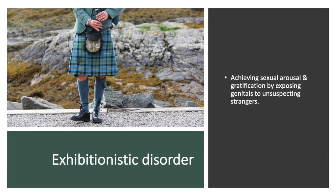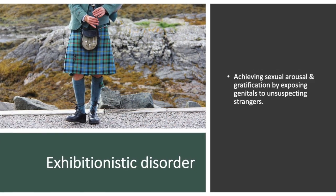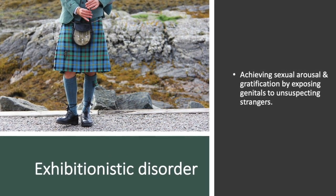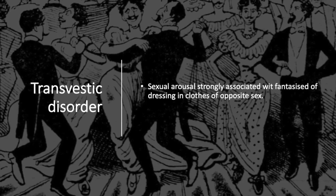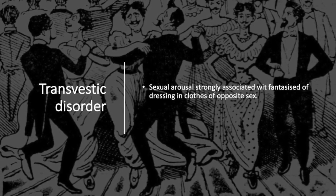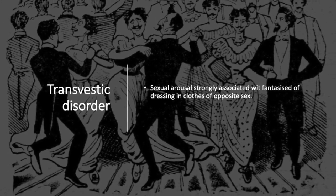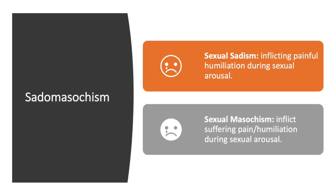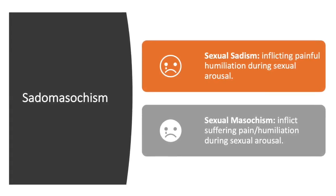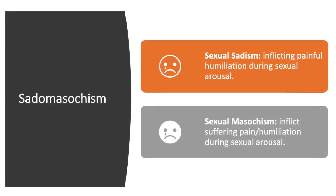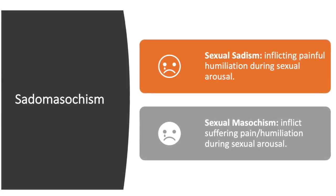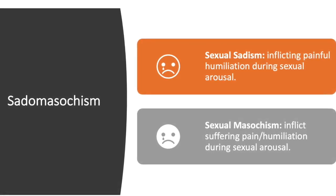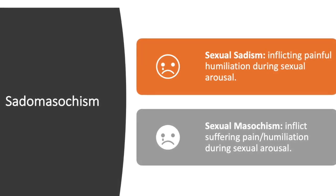Exhibitionistic disorder is when individuals achieve sexual arousal and gratification by exposing their genitals to unsuspecting strangers, possibly gaining pleasure from the same anxiety-producing risk. Transvestic disorder is when individuals are strongly sexually aroused by fantasizing about dressing in clothes of the opposite sex. Sexual sadism is the inflicting of painful humiliation during sexual arousal, while sexual masochism is desiring to endure pain or humiliation during sexual arousal — one inflicts pain while the other desires to endure it, both linked to increased risk, anxiety, and subsequent arousal.